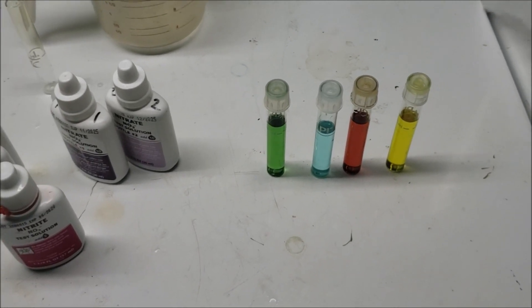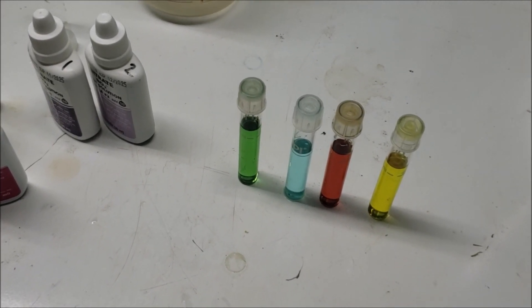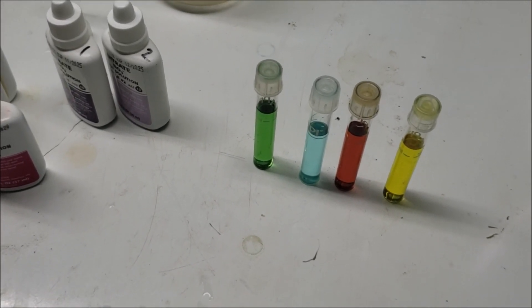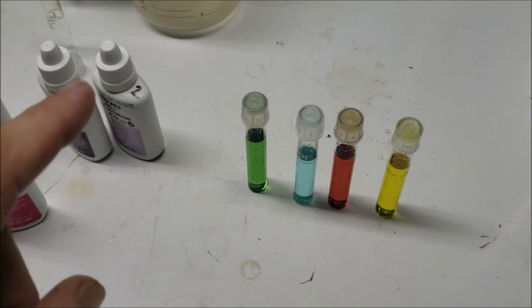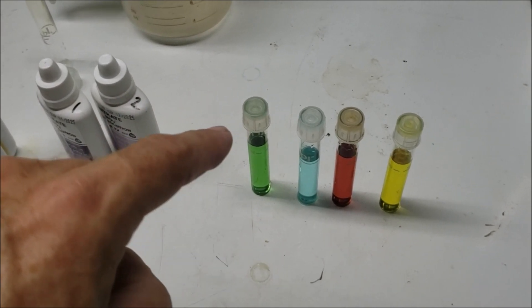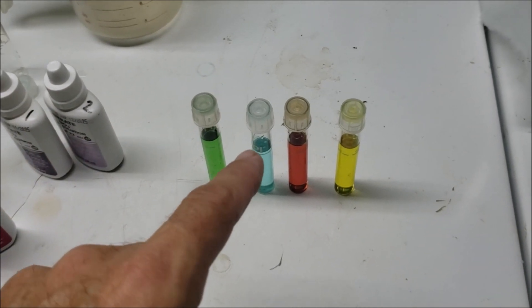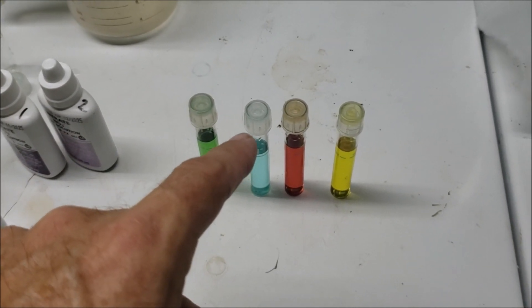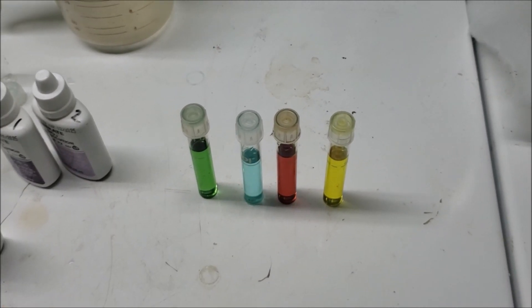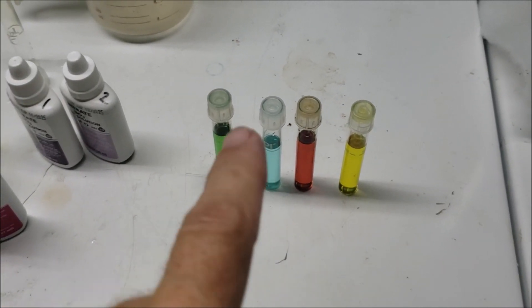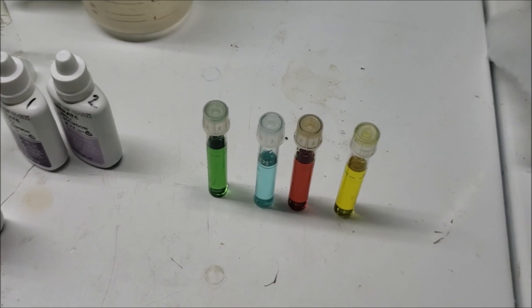That had me scratching my head for a few minutes until I thought about it. When I added that bacteria, not only did I add the ammonia oxidizing bacteria, I also added the nitrite oxidizing bacteria. So whatever amount of bacteria in there has been dealing with the ammonia and converting the ammonia into nitrite, there's equally enough bacteria in there to immediately deal with that small amount of nitrite and almost instantly convert it right into the nitrate.